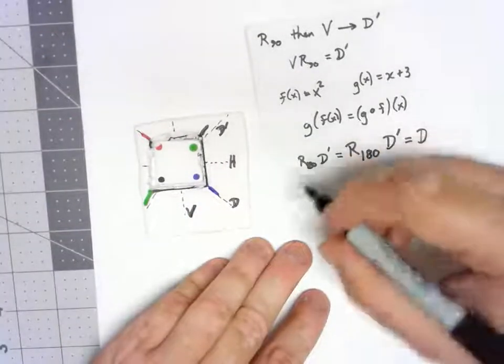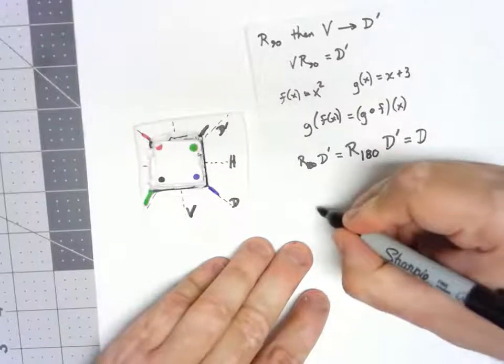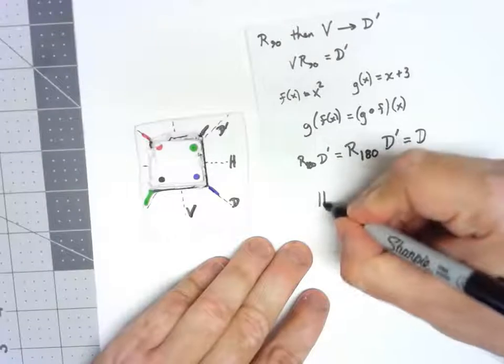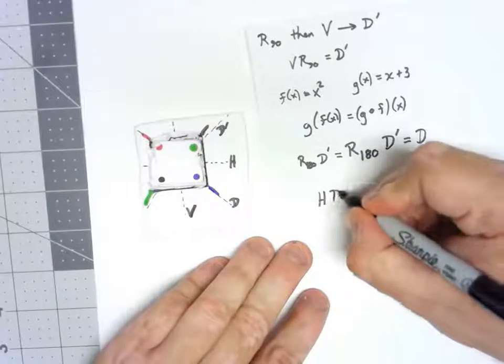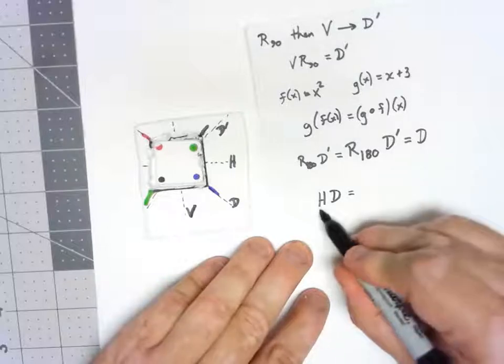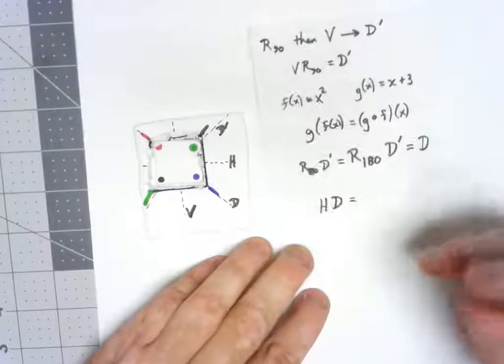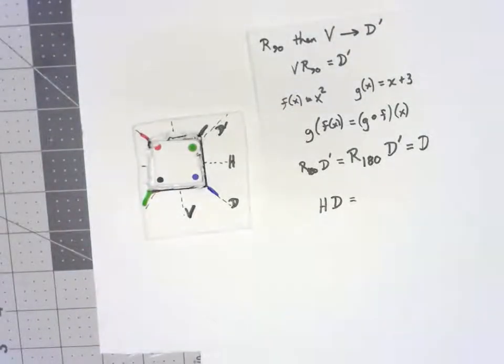Why don't you do one? Let's say, what happens when you do a h d? Of course, again, that means you're going to flip across the diagonal first, then flip across the horizontal. Go ahead, pause the video and see if you can figure that out.